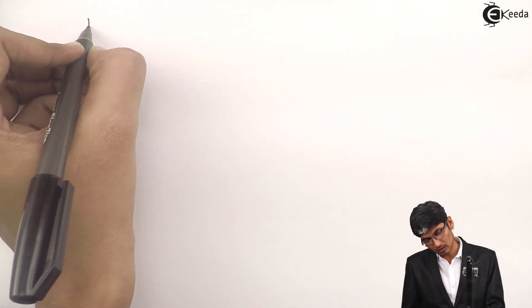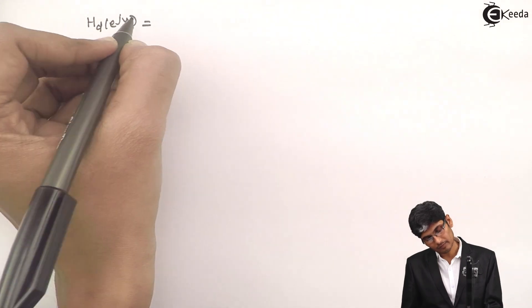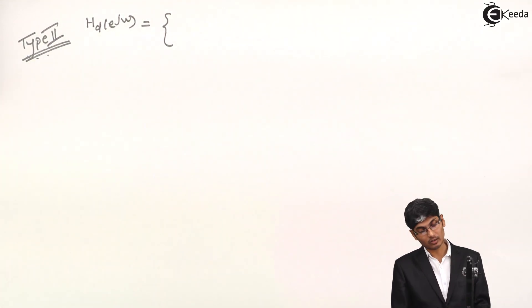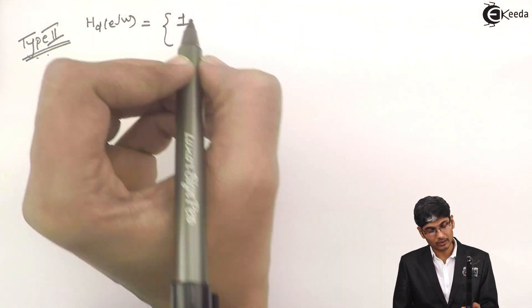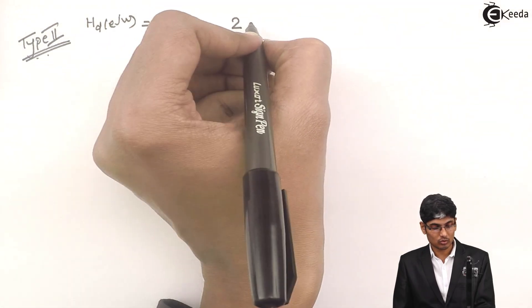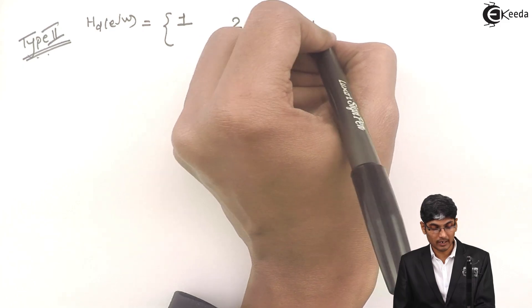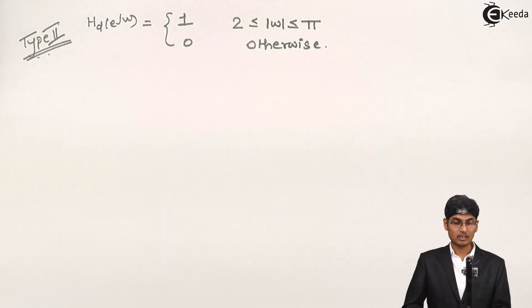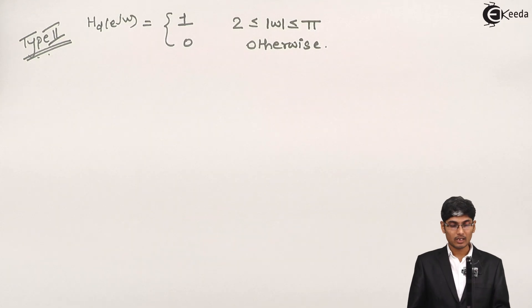Hi friends, let us see one more variation in a problem — how to apply the window technique to a Type 2 problem. In a Type 2 problem, you are given H_d(e^jω). Let us say H_d(e^jω) is given as 1 for 2 ≤ |ω| ≤ π and 0 otherwise.